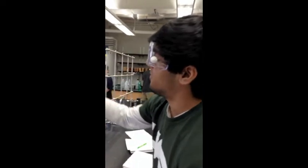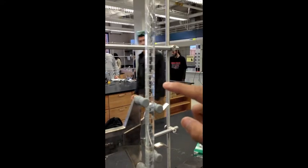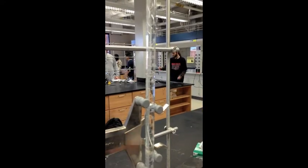In order to read the volume, you have to look at the bottom of the meniscus and determine where the bottom is, right there. You subtract the initial volume from the final volume, and the final volume here is about 25.7.